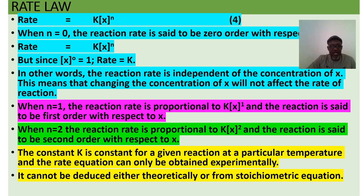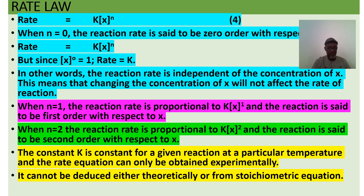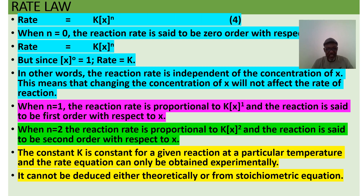When n = 1, the reaction is first order: rate = k[X]¹. An increase in concentration directly and proportionally increases the rate. When n = 2, the reaction is second order: rate = k[X]². The effect of concentration on rate therefore depends on the order of reaction.